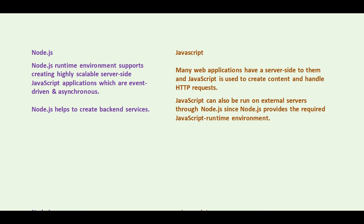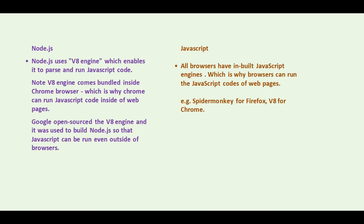JavaScript can also be run on external servers through Node.js, since Node.js provides the required JavaScript runtime environment. Node.js uses the V8 engine which enables it to parse and run JavaScript code. Note that the V8 engine comes bundled inside the Chrome browser, which is why Chrome can run JavaScript code inside web pages. Google open-sourced the V8 engine and it was used to build Node.js so that JavaScript can be run even outside of browsers.